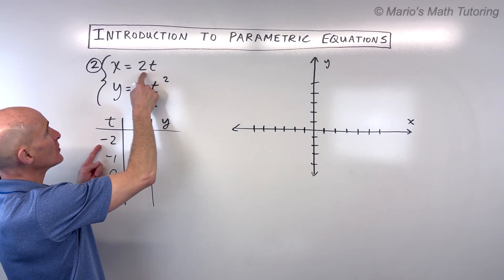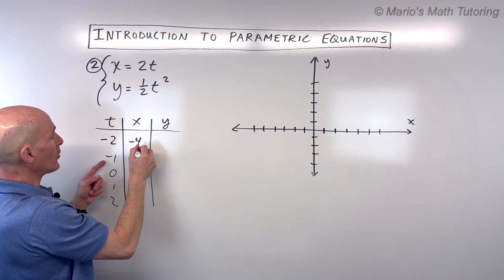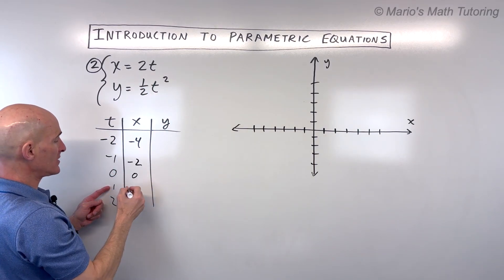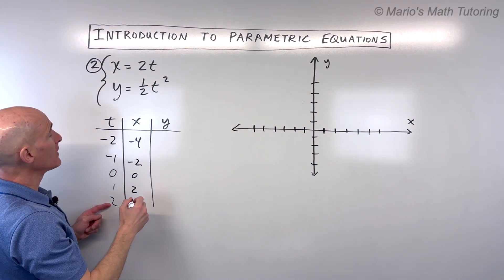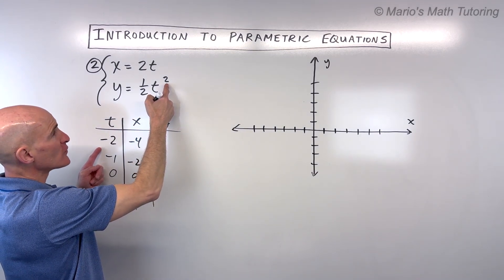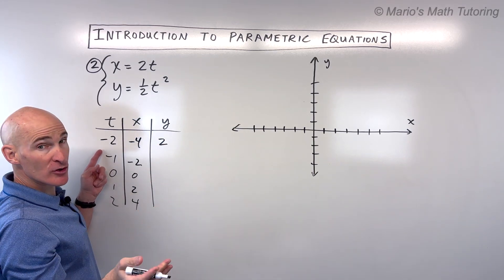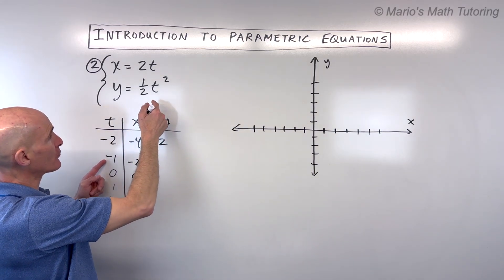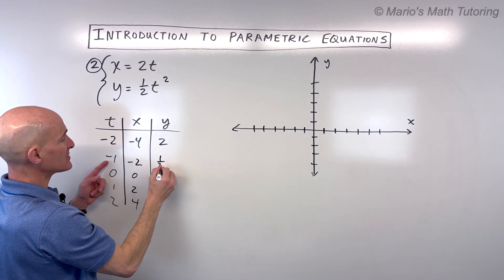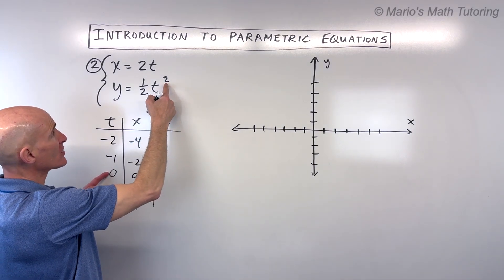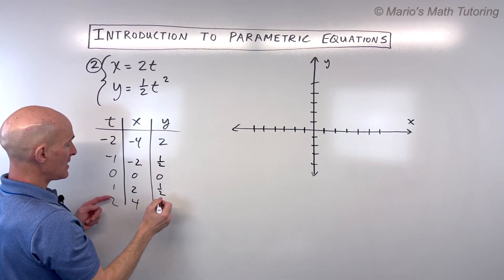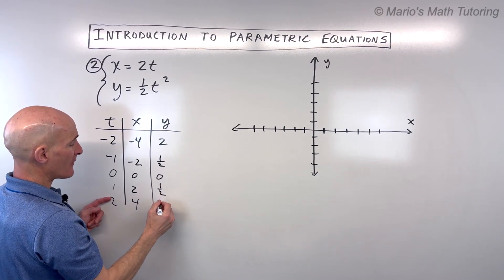When I put negative two in, two times negative two is negative four. Two times negative one is negative two. Two times zero is zero. Two times one is two. Two times two is four. For the second equation, when I put negative two in, negative two squared is four times a half is two. Remember your order of operations: parentheses, exponents, then multiplication. Negative one squared is one times a half is one half. Zero squared is zero. One squared is one times a half is one half. Two squared is four times a half is two.